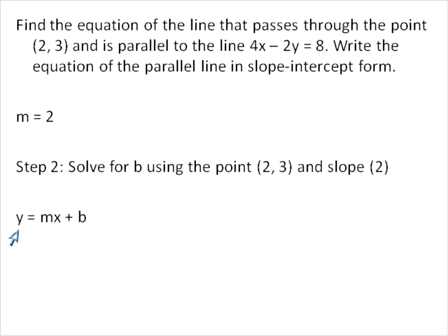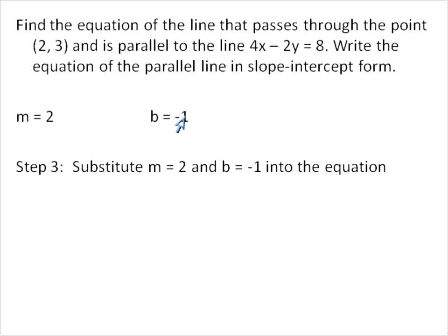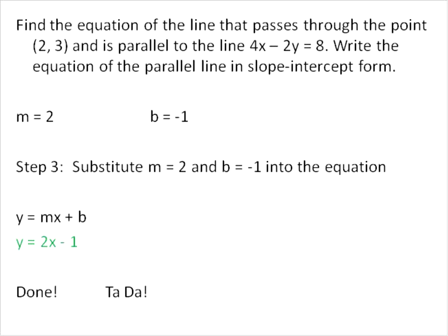I'm going to substitute my point (2, 3) as the x and y values in the slope-intercept form. x is 2, y is 3, and slope m is 2. I'm doing this so I can isolate b. 2 times 2 is 4, and I'll subtract 4 from both sides, giving me b = -1. Now I substitute slope of 2 and b of -1 into y = mx + b. The final answer is y = 2x - 1. That's the equation of the line parallel to this line and passing through the point (2, 3).